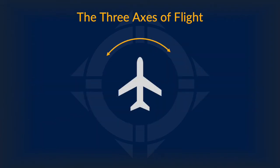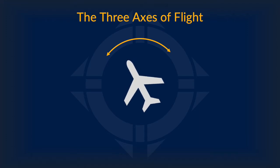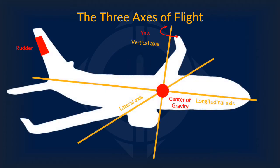To give you a better understanding of yaw, here is a quick demonstration of how it looks like in practice. The yaw is controlled by the rudder of the airplane. By shifting it left or right, you can make the airplane yaw towards a specified direction. We will get more into this in our next video.